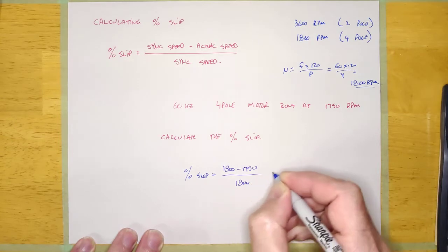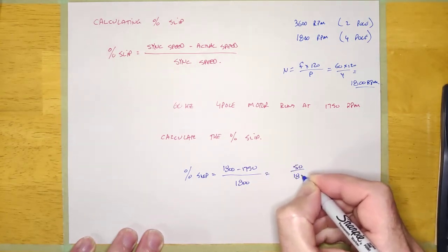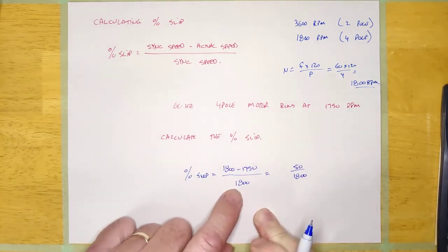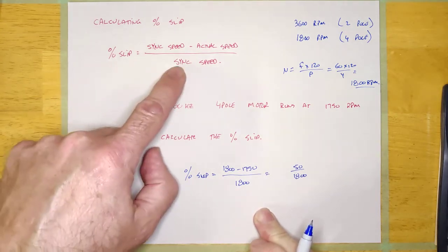So percent slip, it should be 1,800 sync speed minus 1,750 actual speed over 1,800, which is the sync speed, which is going to be 50 over 1,800. And really what this formula is doing is calculating the amount it's slipping and dividing it by the sync speed.